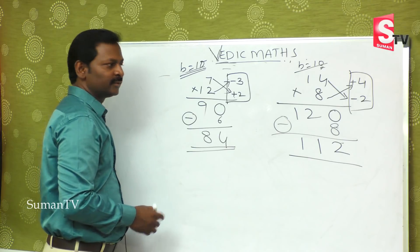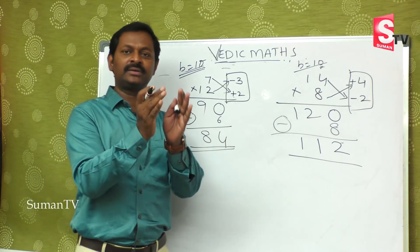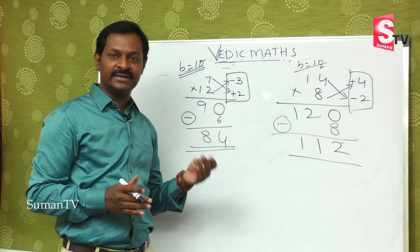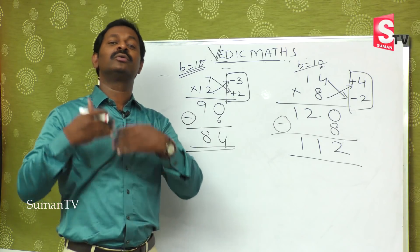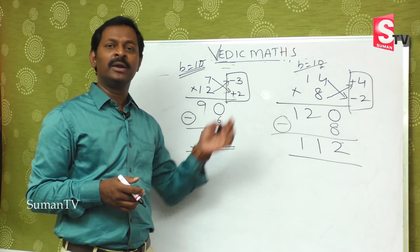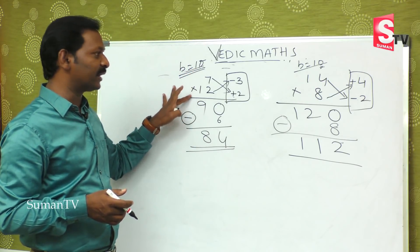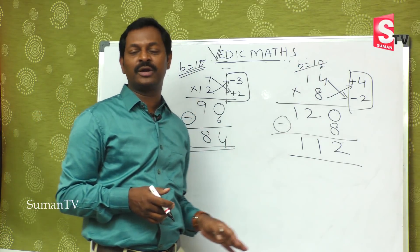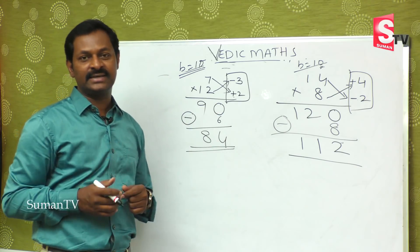So when both numbers are below the base, minus into minus is plus. When both are equally above the base, plus into plus is plus. But when one number is below and one is above the base, then we apply minus — that's the rule we follow.